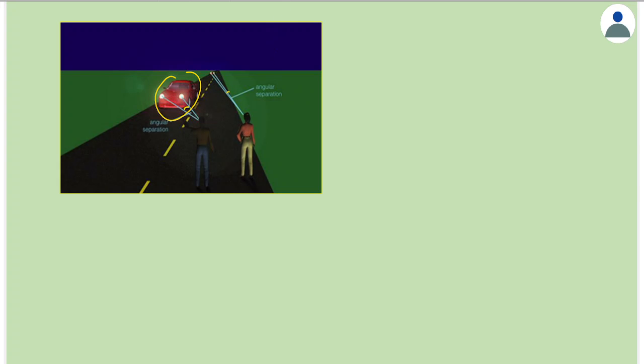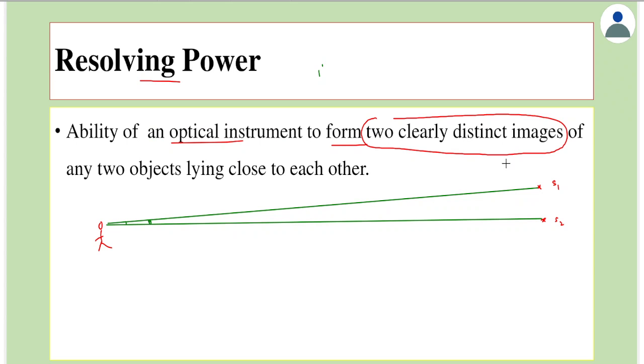We can use the same logic to think of two far away stars. If the angle is very small, then they cannot be seen as two distinct objects, rather they will be seen as a single object. Even though there are two objects, it appears to be a single object.